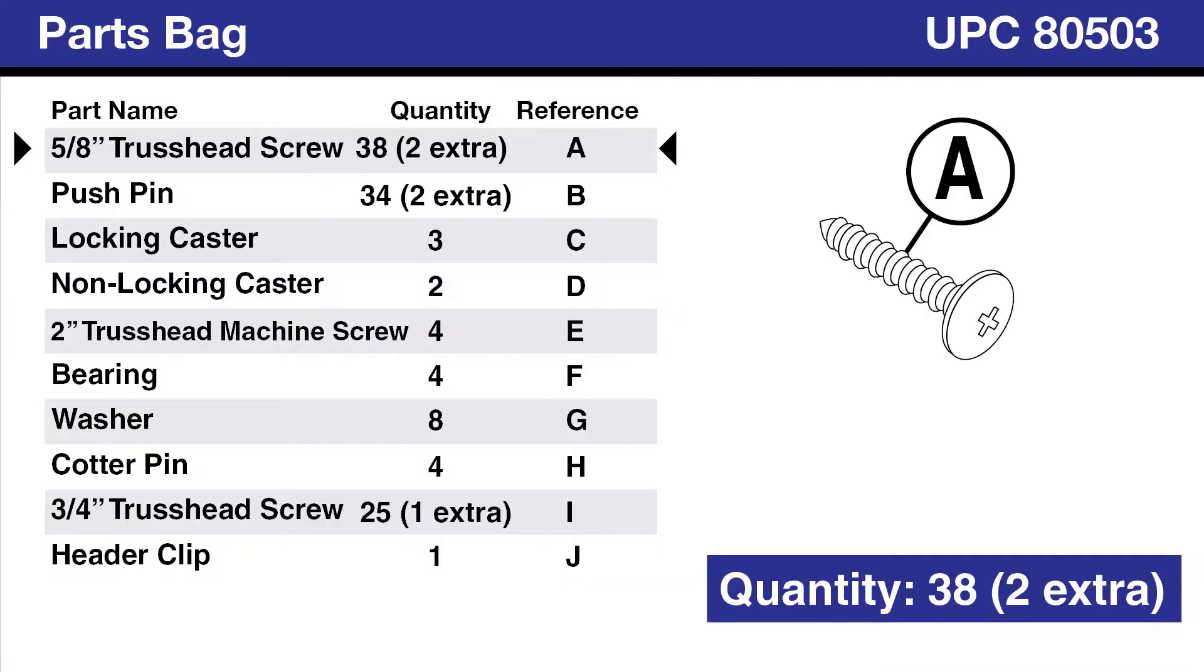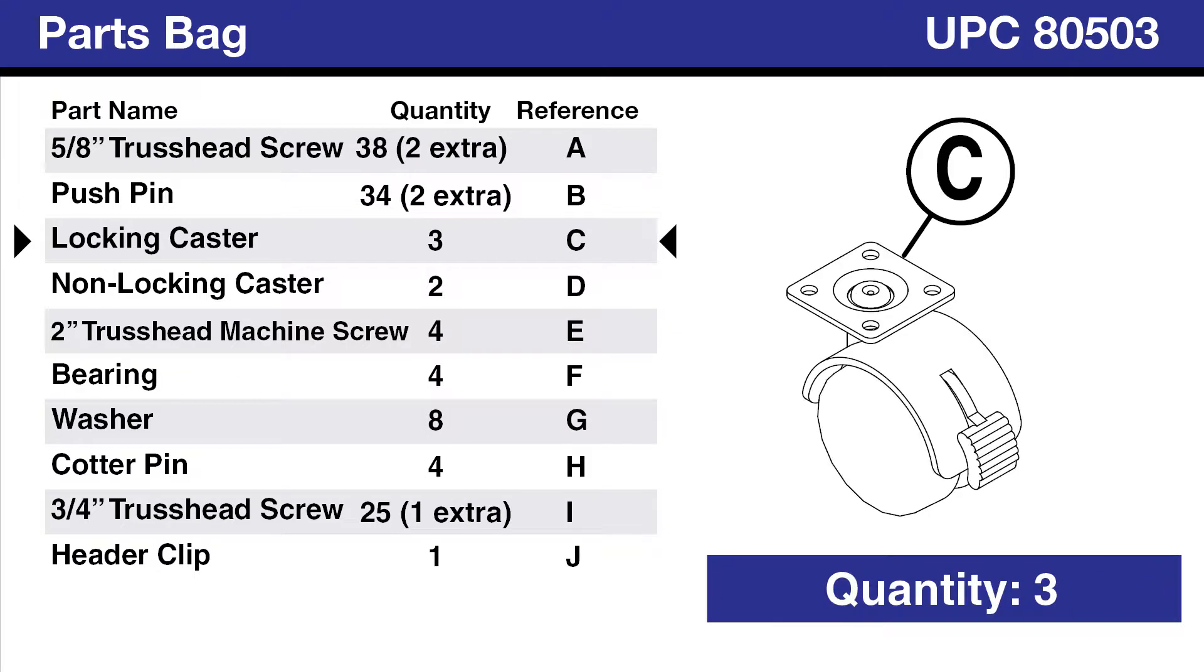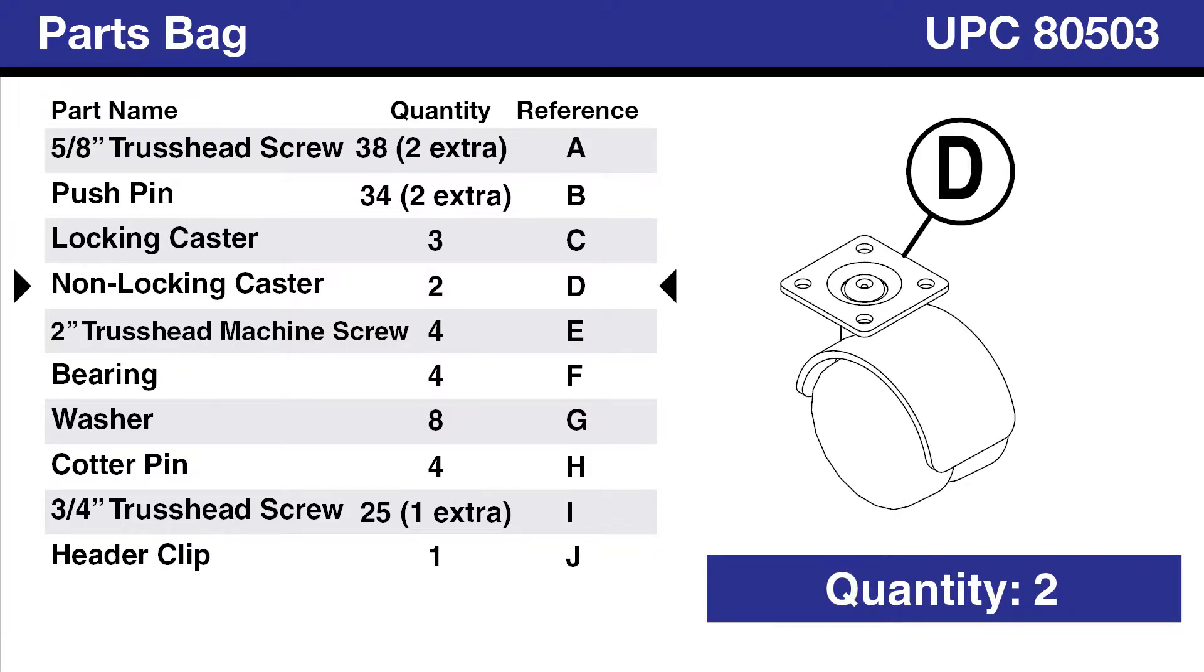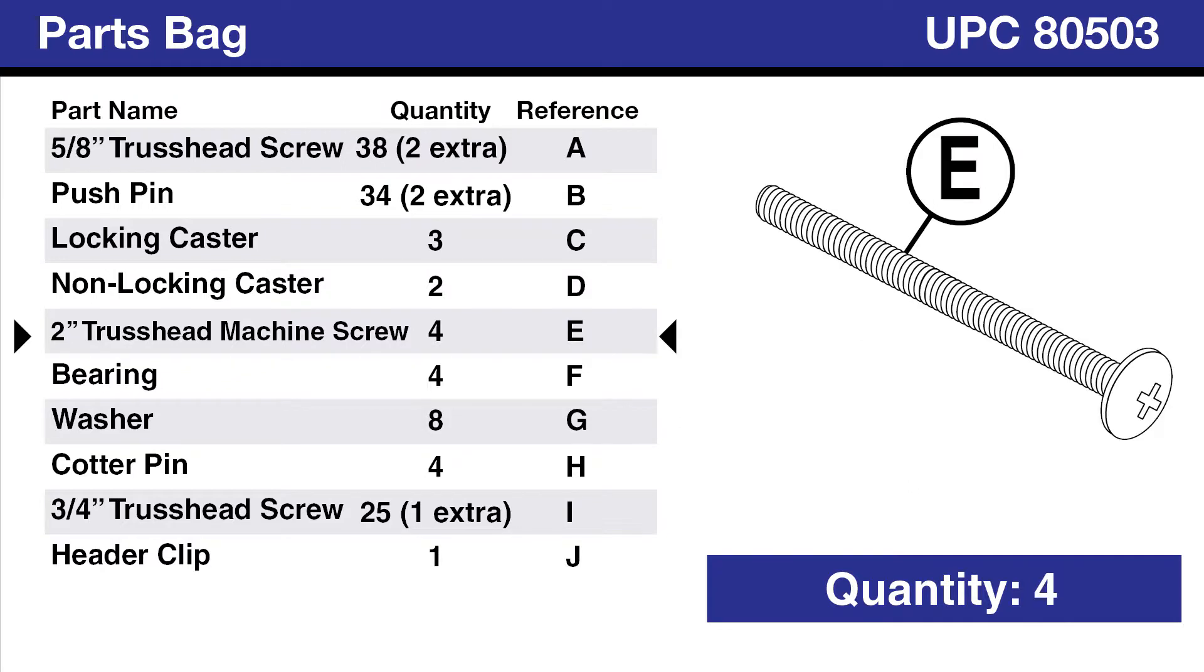Parts bag: 5/8 inch truss head screw, quantity 38, 2 extra, reference A. Push pin, quantity 34, 2 extra, reference B. Locking caster, quantity 3, reference C. Non-locking caster, quantity 2, reference D. 2 inch truss head machine screw, quantity 4, reference E.